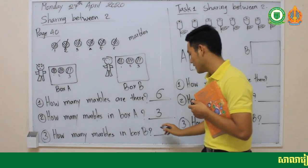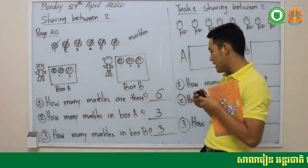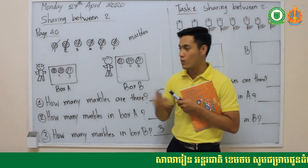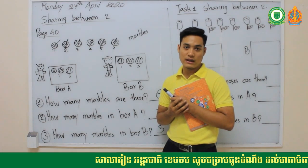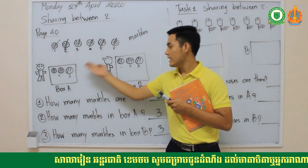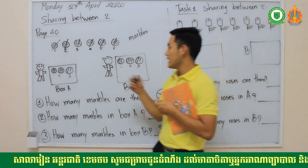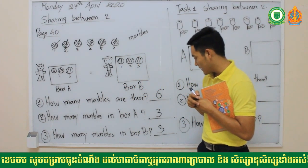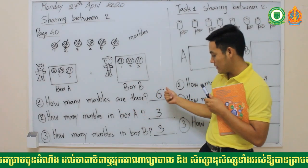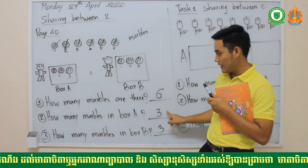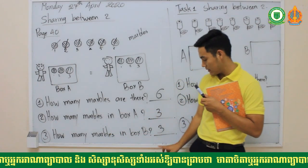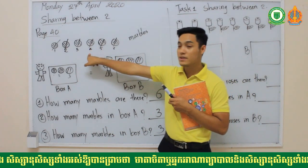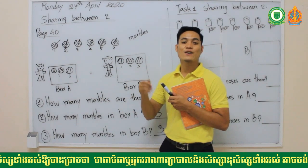To make sure your sharing is right, check that box A and box B are equal. How many in box A? Three. How many in box B? Three. So three plus three equals six, and six equals six. The answer is correct.